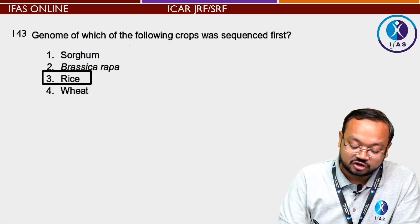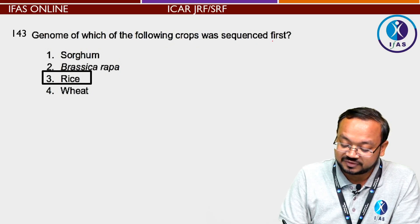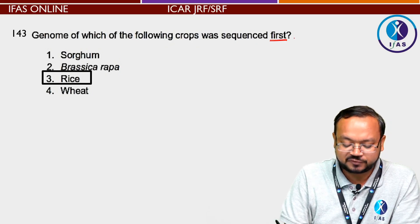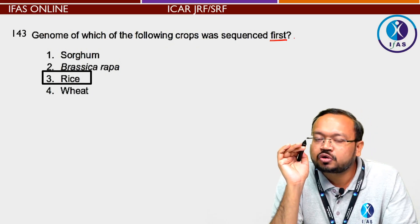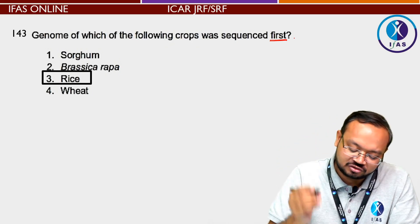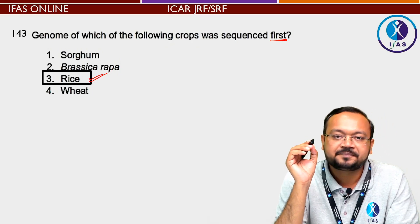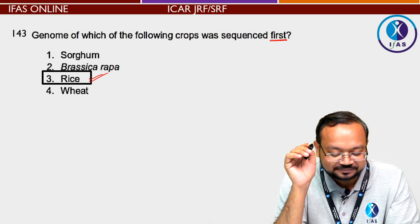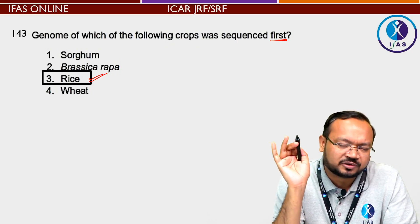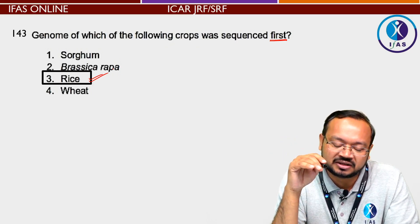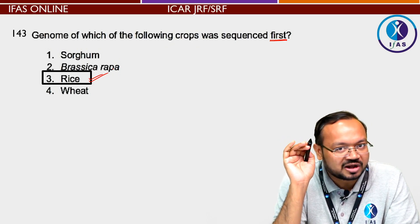Next question: Genome of which following crop was sequenced first? याद रखना, crop की बात हो रही है। Rice की सबसे पहली बार genomic sequencing हुई थी। अगर यहाँ पर plant का नाम सिर्फ होता, crop नहीं होता, तो हम Arabidopsis thaliana का नाम लेते, लेकिन यहाँ जो सही answer होगा वो है rice।